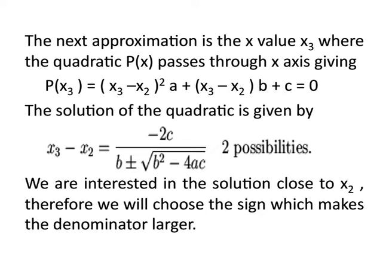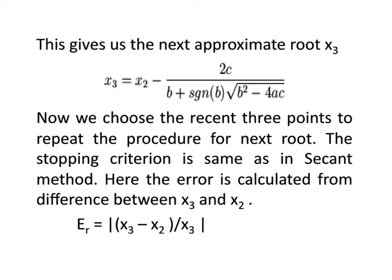So, the next approximate root is given by: x3 = x2 − 2C / (B + sign(B) · √(b² − 4AC)). The sign of B ensures the denominator is larger, so x2 and x3 are closer. The stopping criteria is very similar to the secant method — we calculate the relative error and compare it with the allowed error. If the relative error is greater than the allowed error, we repeat the whole process.